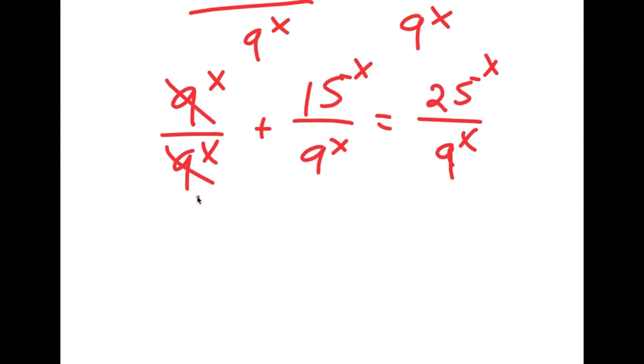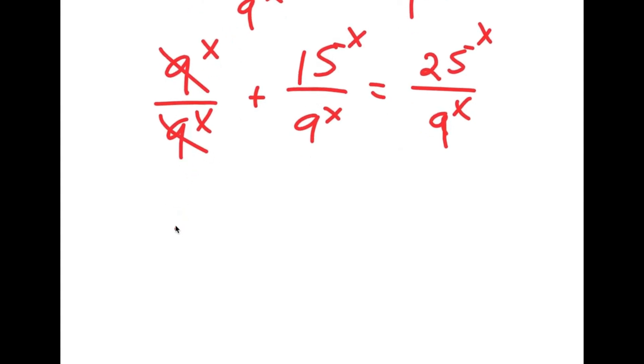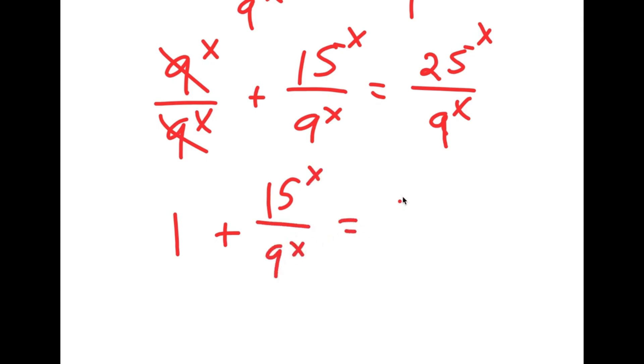I'm going to first start by dividing both sides by 9 to the power of x. So now this results in 9 to the power of x over 9 to the power of x, plus 15 to the power of x over 9 to the power of x, is equal to 25 to the power of x over 9 to the power of x. Now, 9 to the power of x and 9 to the power of x cancel out. So I get 1 plus 15 to the power of x over 9 to the power of x is equal to 25 to the power of x over 9 to the power of x.